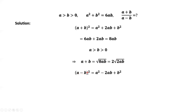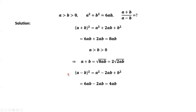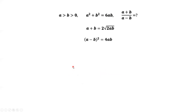A minus B squared equals A squared minus 2 times A times B plus B squared. Since A squared plus B squared equals 6AB, this gives us 6AB minus 2AB, which equals 4A times B.